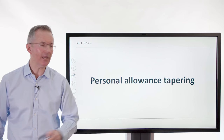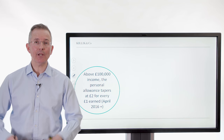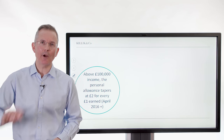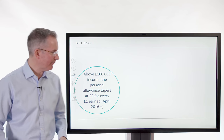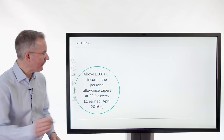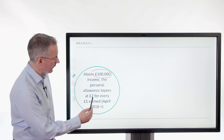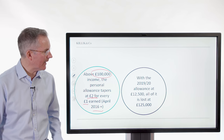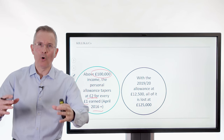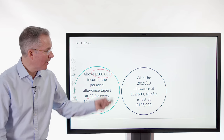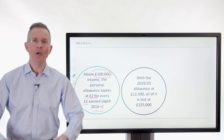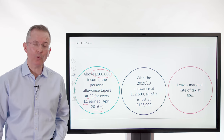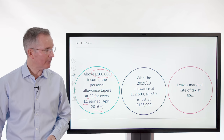Personal allowance tapering is another slightly sneaky one, and a lot of people don't realise it's happening to them. Above £100,000 — and increasing numbers of people earn at that level in the UK — the personal allowance tapers away at £2 for every £1 earned. From April 2016, the £100,000 threshold hasn't moved, nor has the principle of two-for-one. The effect of losing the personal allowance is quite dramatic: in 2019-20, you'll have lost all of your tax-free personal allowance by the time you reach £125,000 of income. It can leave people, if they're not careful, being taxed at a rate of 60%.